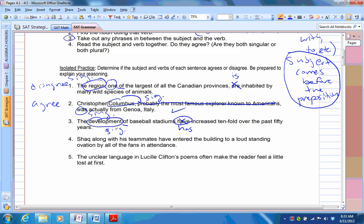If you said baseball stadiums have increased, sure. But we're talking about development. This is a tough one. Shaq, along with his teammates, have entered the building to allow ovation by all the fans in attendance. So, a bit tricky, but along is still a preposition. You don't use the word and. If you said Shaq and his teammates have, it would be a different story. But this is still singular. So if you had Shaq and dot dot dot, then that whole thing would be plural. But if you use the word along, that's a preposition. It's just Shaq. So this has to be has.